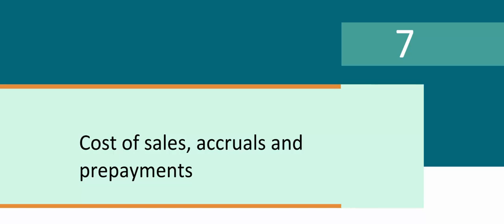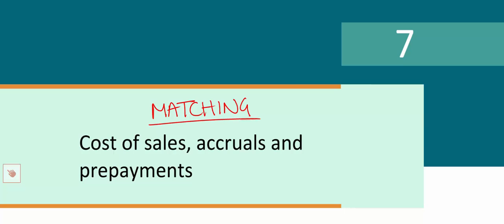Hi and welcome to chapter 7, cost of sales, accruals and prepayments. This is an exam critical chapter that can be summed up with one key word: matching. We saw right at the start of your studies that one of the key concepts of accounting is the accruals or matching concept.